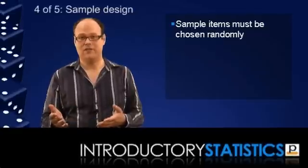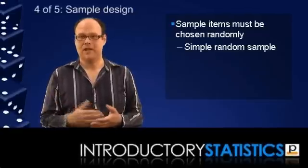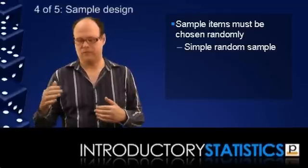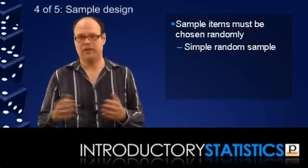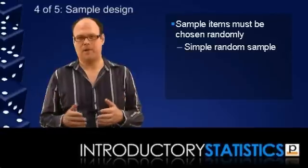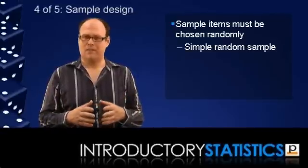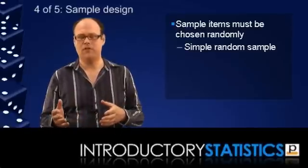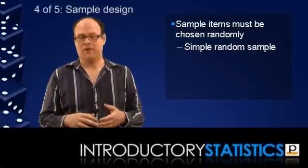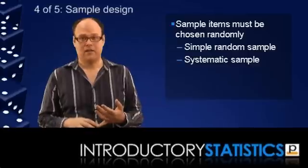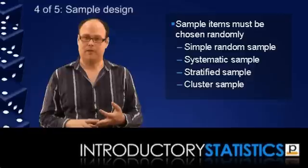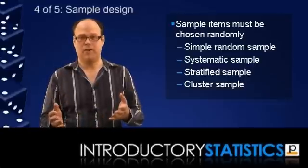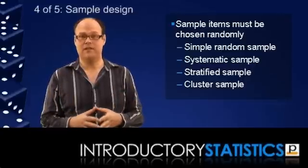Now the simplest way to do that is to use simple random sampling. That means getting all the members of the population in a big long list and just choosing members from that list on a completely random basis using some sort of random number generator. Now that method is simple but it actually is quite time consuming. So we often use variations on simple random sampling. Common variations are systematic sampling, stratified sampling and cluster sampling. Again this is just a summary. If you want to learn more about those sampling techniques, you can read about them in the Pisco introductory statistics textbook.